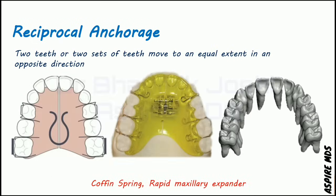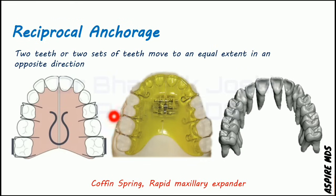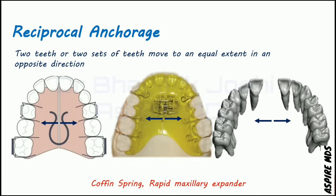Another example of reciprocal anchorage is seen in the coffin spring or rapid maxillary expansion (RME). Both cause maxillary expansion — the coffin spring is a removable appliance and causes slower expansion, while RME causes rapid expansion. Essentially, both push the palatal halves in opposite directions, ultimately causing expansion of the maxilla. This is reciprocal anchorage.